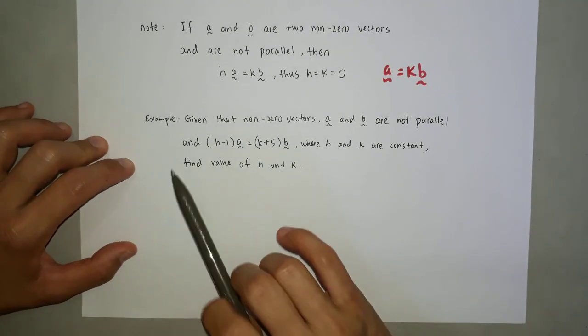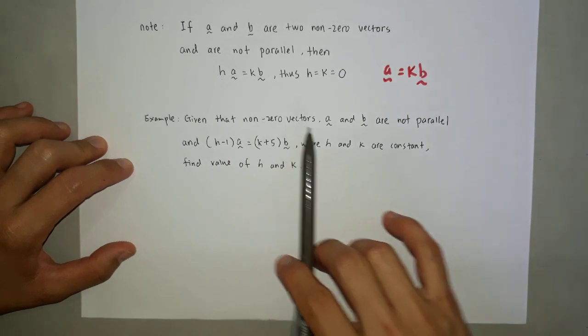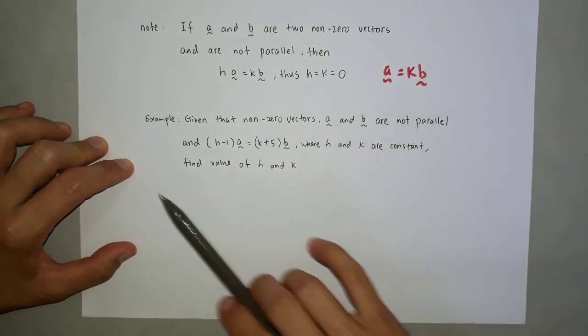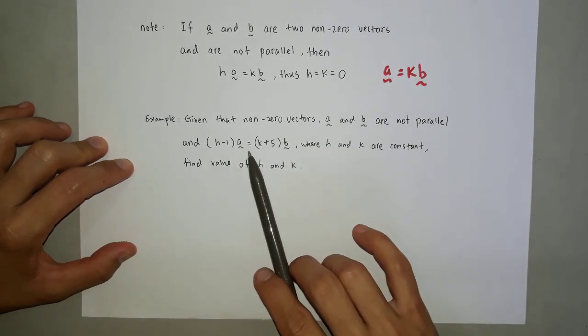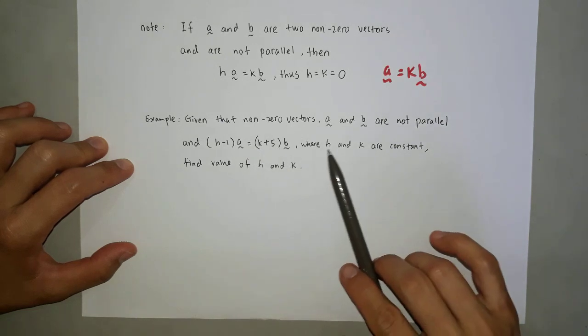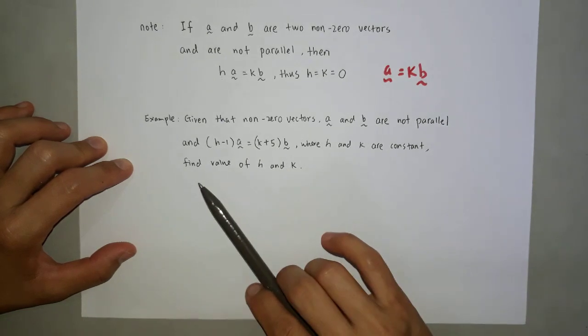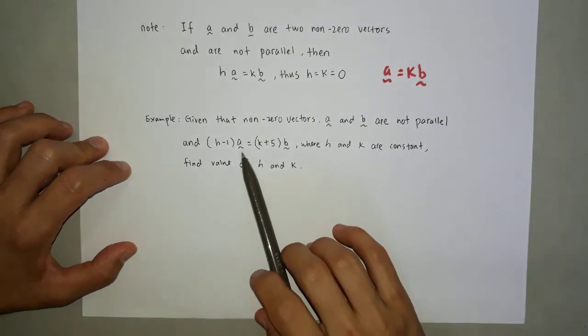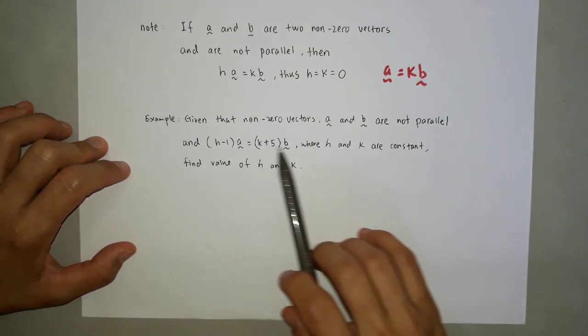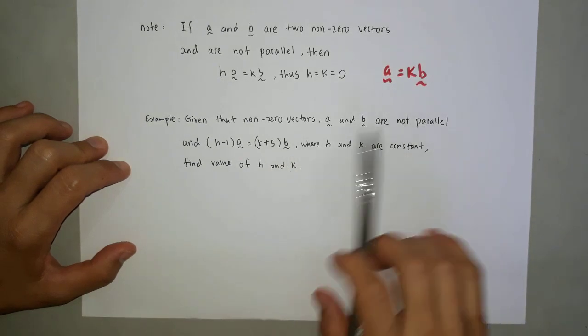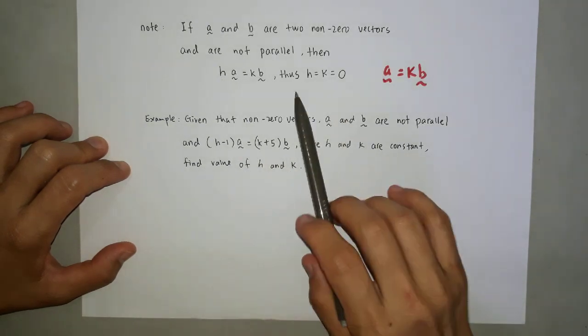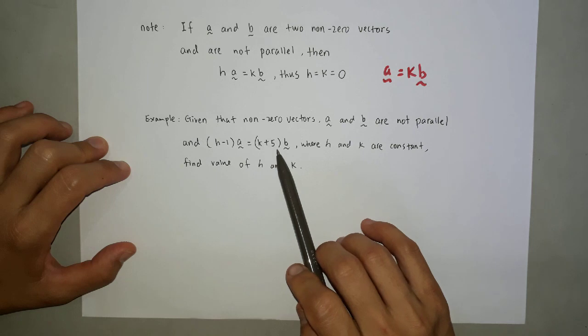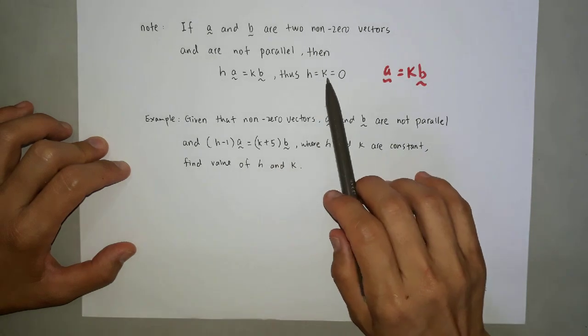Now I give you an example given that non-zero vectors A and B are not parallel, and (H minus 1)A equals to (K plus 5)B, where H and K are constants. Find value of H and K. Solution: A and B are not parallel if only the constant equals to zero. Constant equals to zero.